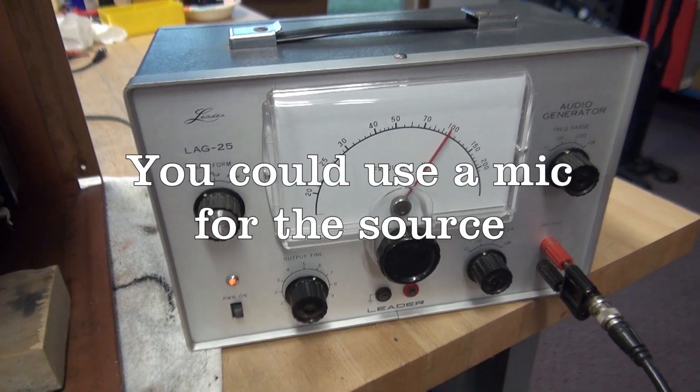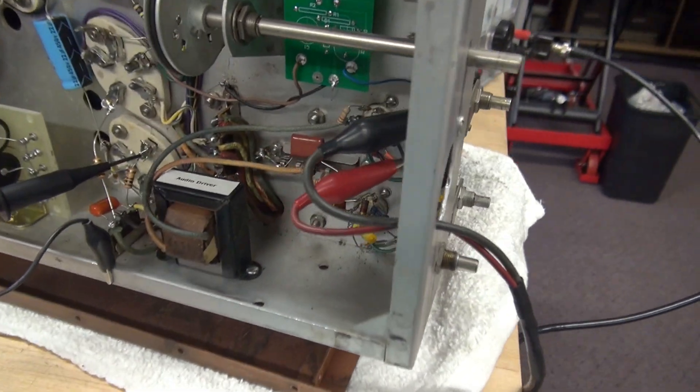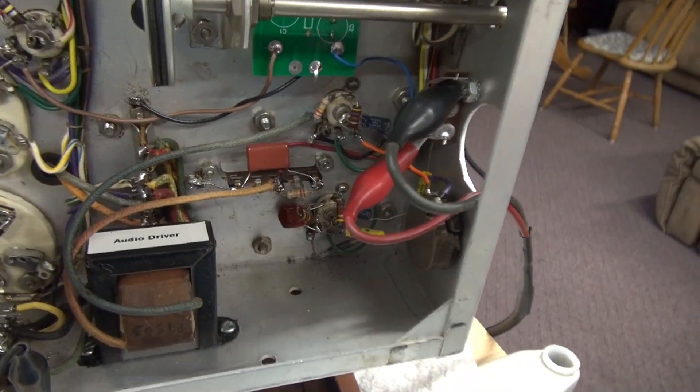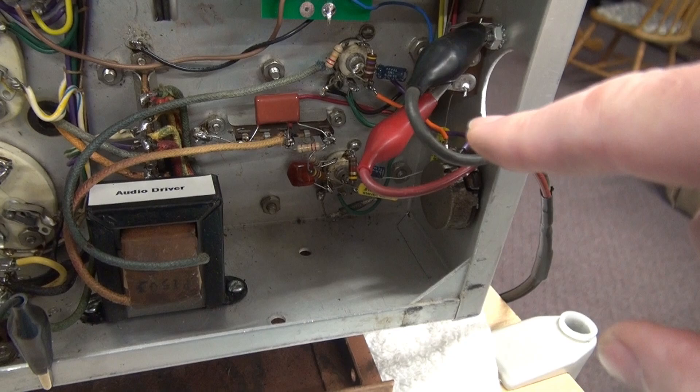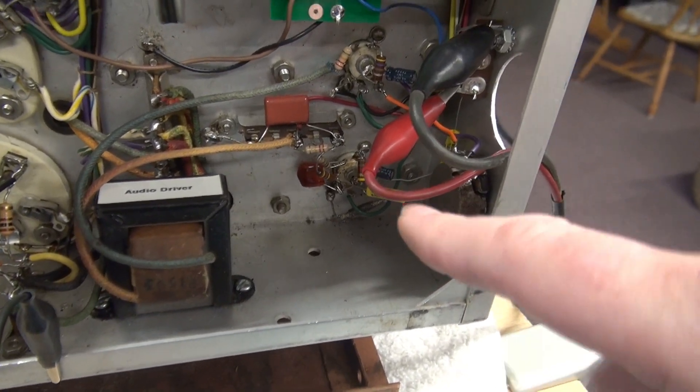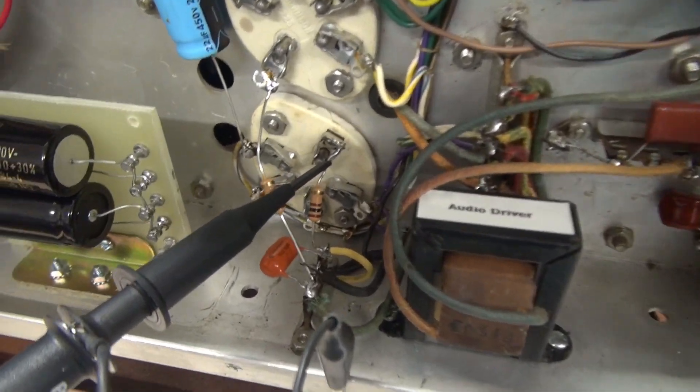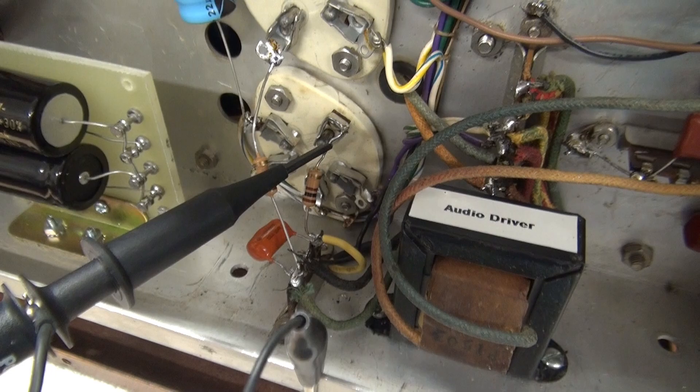So here's the audio generator providing the signal to the mic input of the Viking 2. In this case, I have a terminal board. So we have ground and signal. Signal goes to the first 6AU6 tube through the preamp section, audio driver, and I'm monitoring on the grid of one of the 807 tubes.